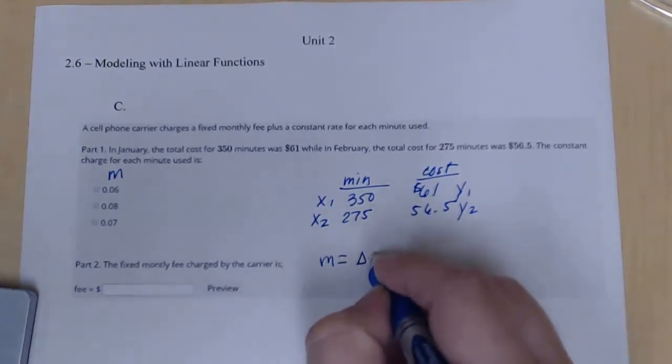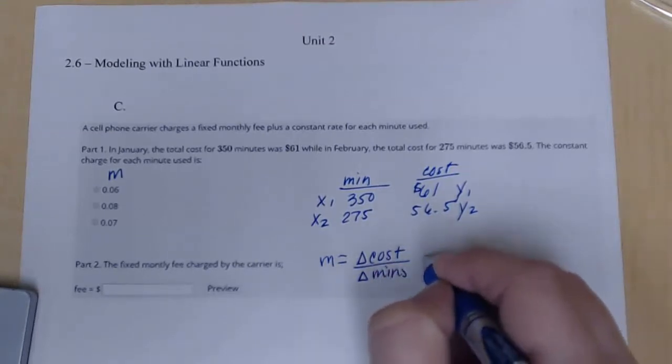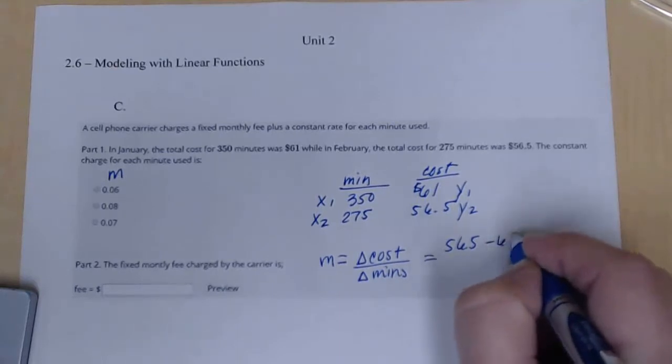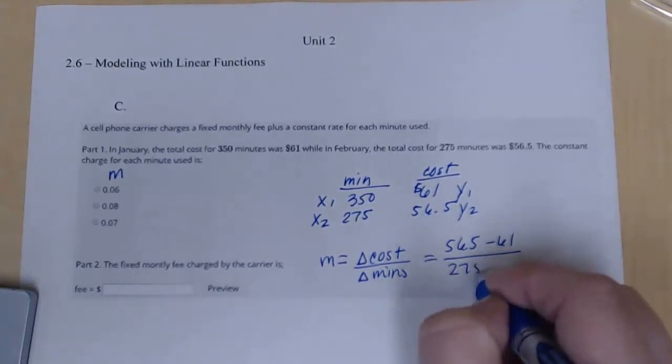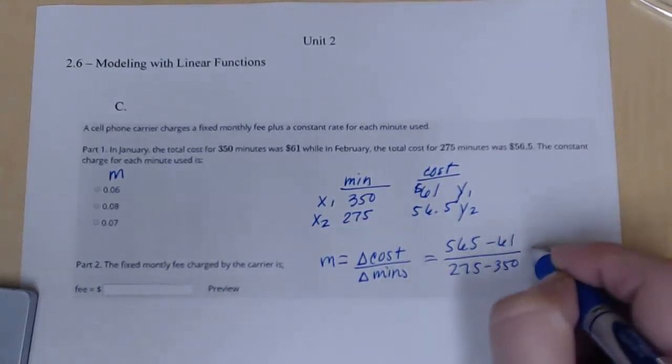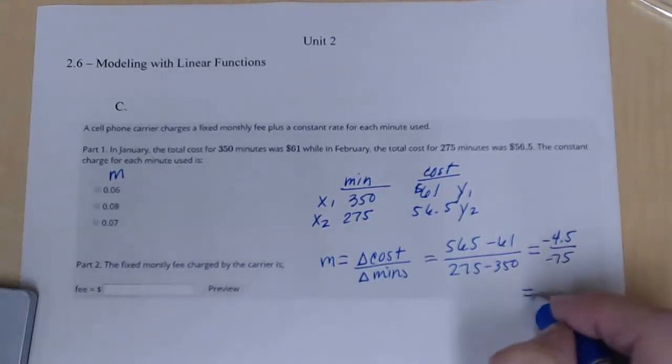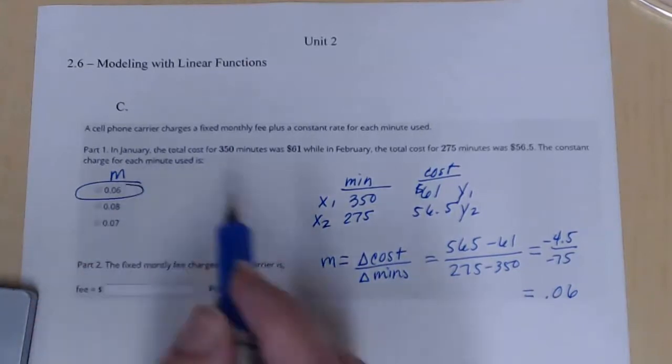So I'm going to do my slope formula. So I'm doing my change in cost over my change in minutes. So that would be 56.5 minus 61 over 275 minus 350. This gives me negative 4.5 over negative 75, just using my calculator, which gives me 0.06. So my slope is 0.06.